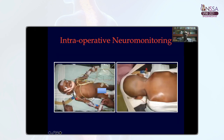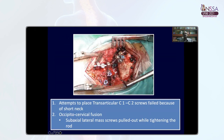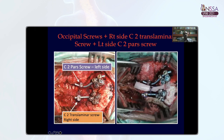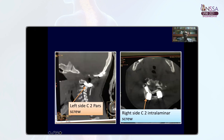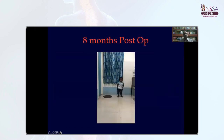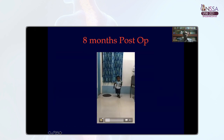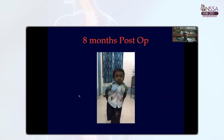This child was operated under intraoperative neuromonitoring. First we attempted transarticular screw fixation, which was not possible because of the short neck and thoracic kyphosis. We then moved to C1-C2 fusion, which could not be done because of the pectus carinatum — intrathoracic pressure increased, leading to significant engorgement of the C2 venous plexus and blood loss. When we went to the third option of occipitocervical fusion, the subaxial lateral mass was pulled out, and eventually we did an occiput-C2 fusion using a C2 translaminous screw on one side and a C2 pars screw on the other side. The post-op CT shows the C2 pars screw on one side and the C2 translaminous screw on the other. The boy was walking normally eight months post-op — though these children will not have a normal-appearing gait because of skeletal dysplasia.